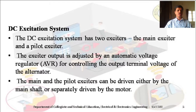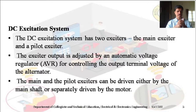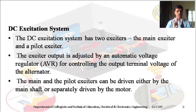In the DC excitation system, the main and pilot exciters can be driven either by the main shaft or both are separately driven by other motors.